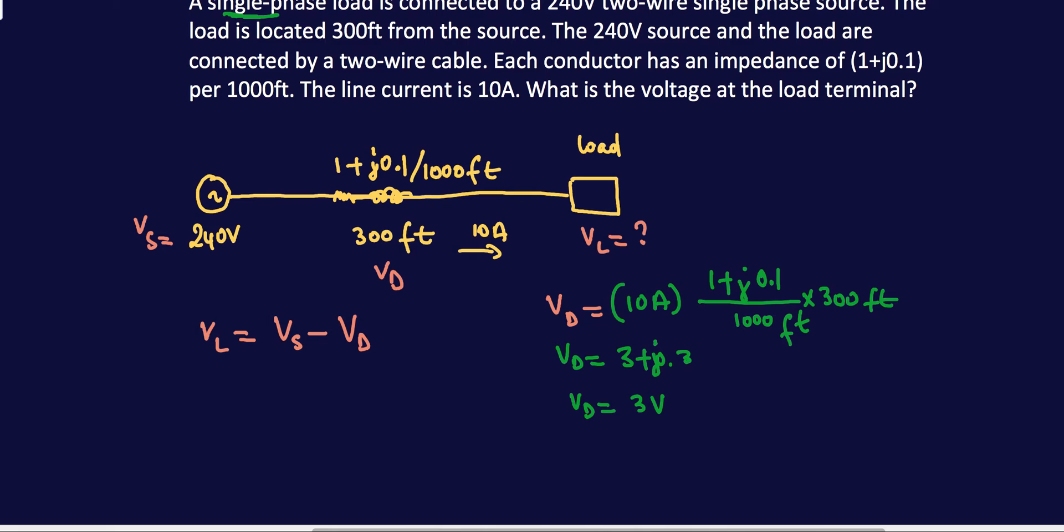So you have a neutral—the neutral return current will be equal to the phase current. Your voltage drop is really not 3V; it's actually times two because you have to take into account the return path. So remember that: single phase, take into account the return path.